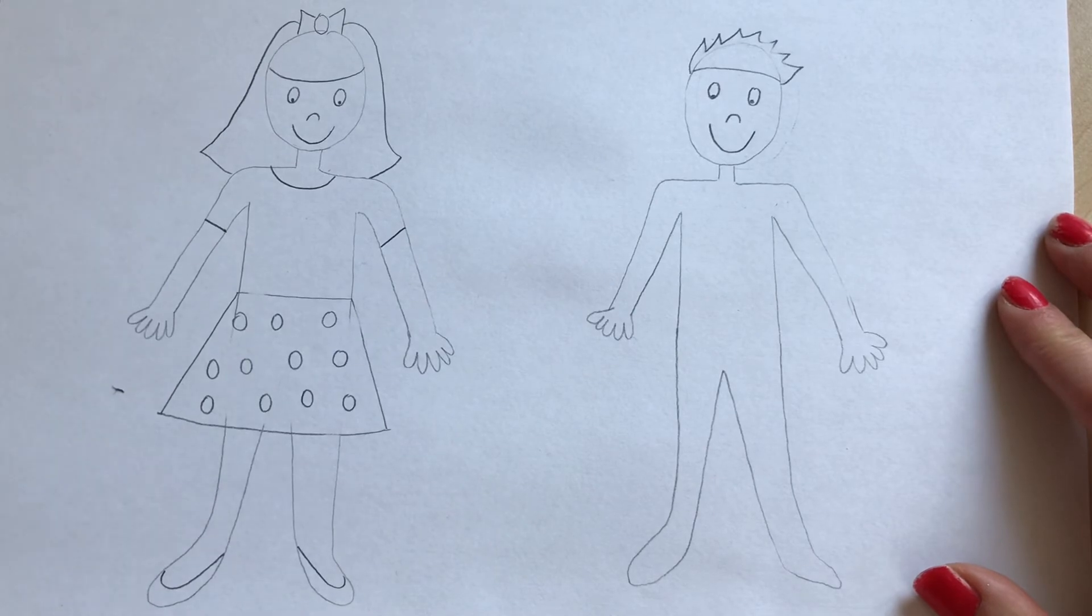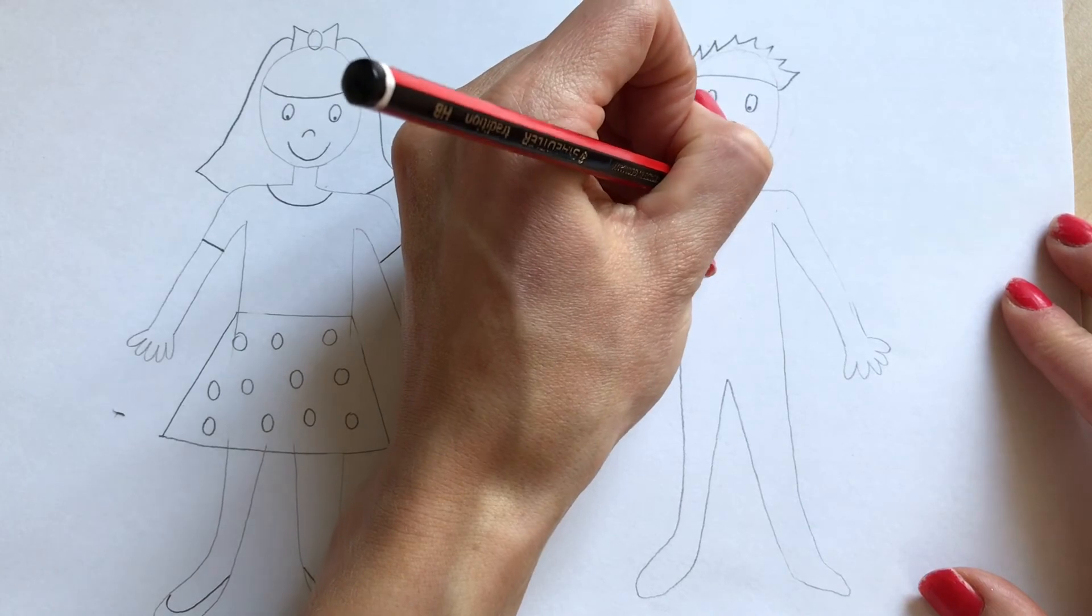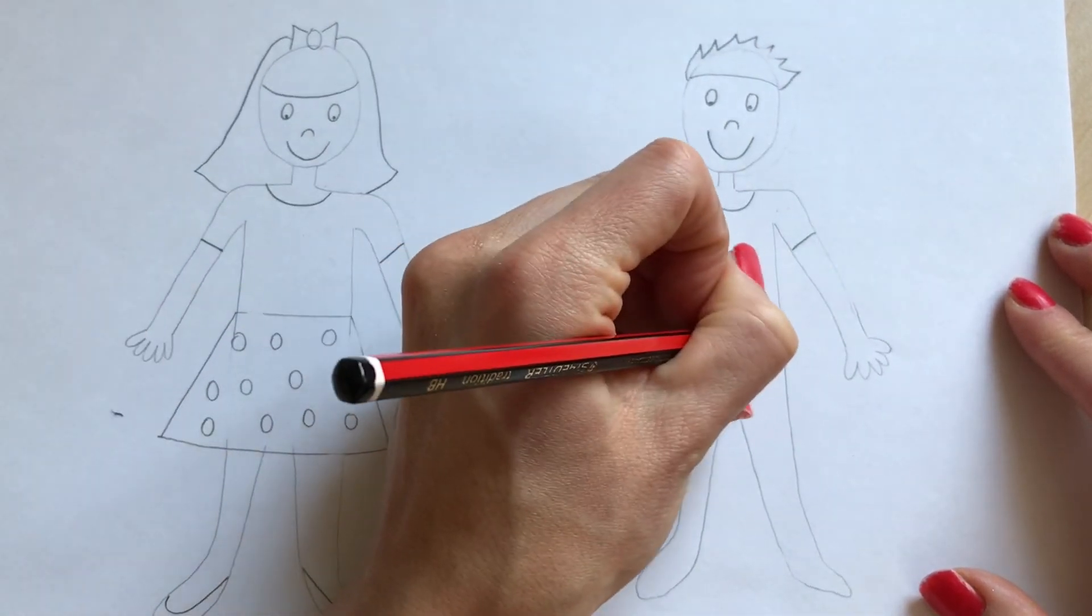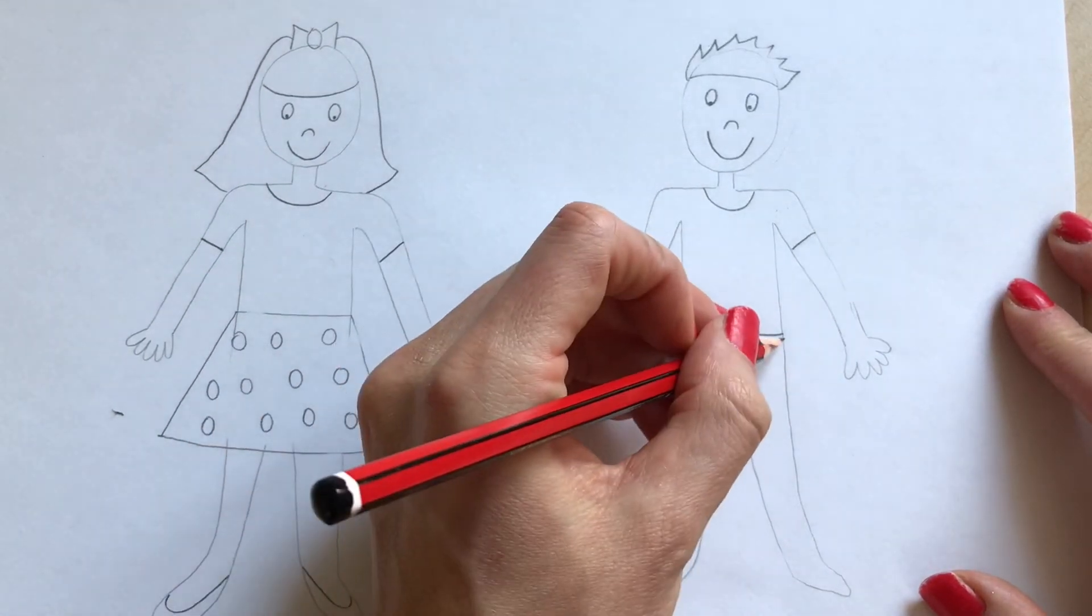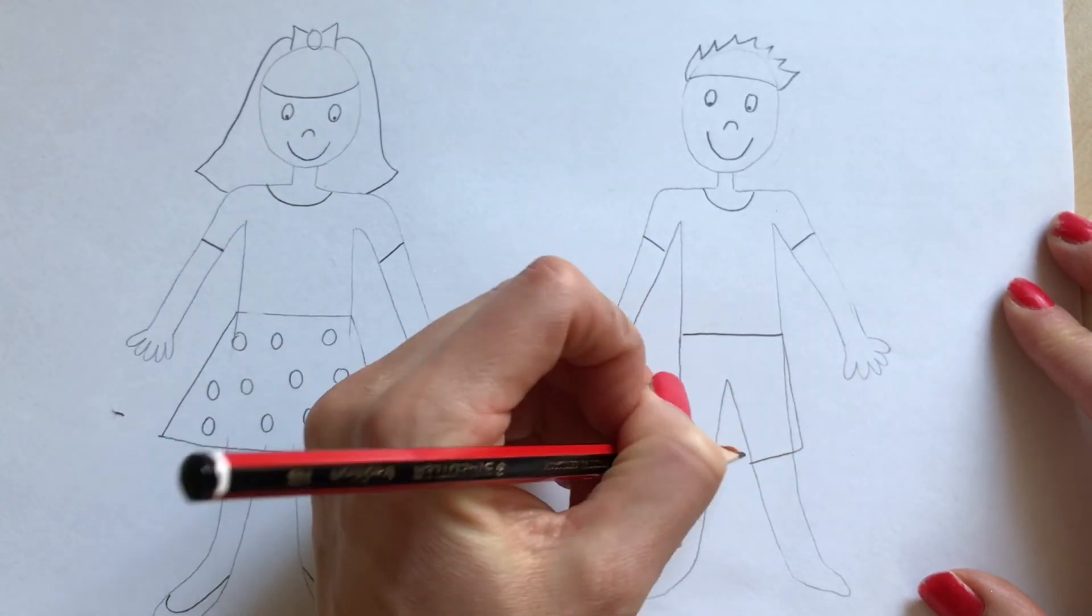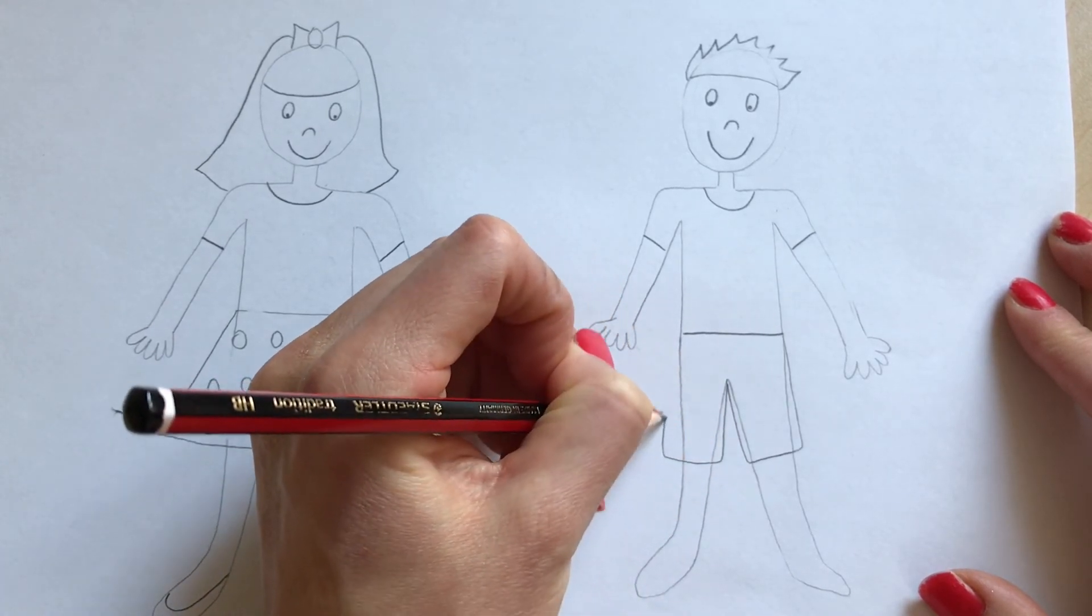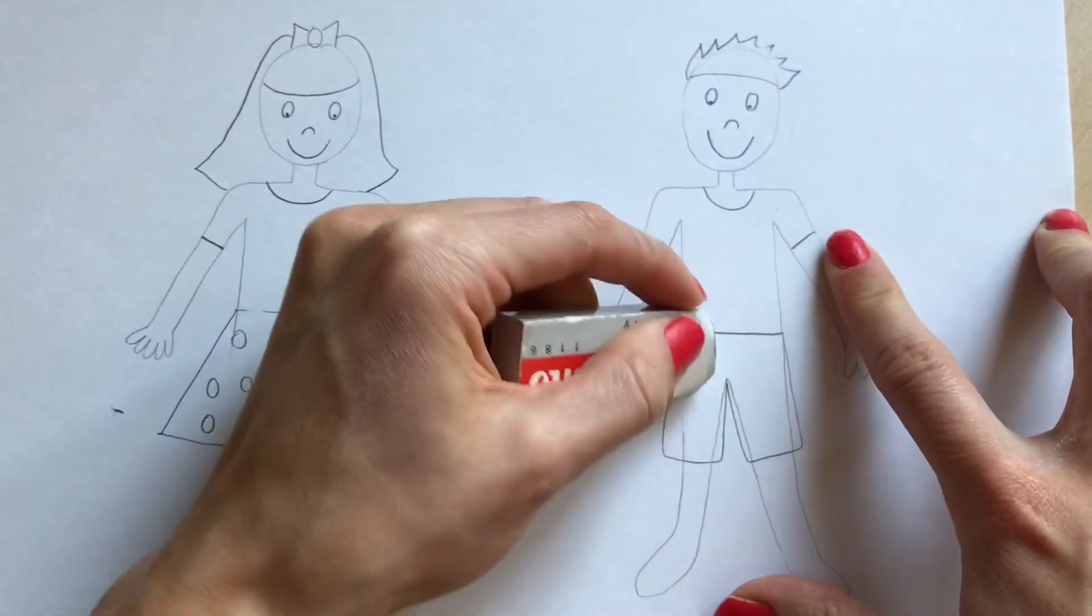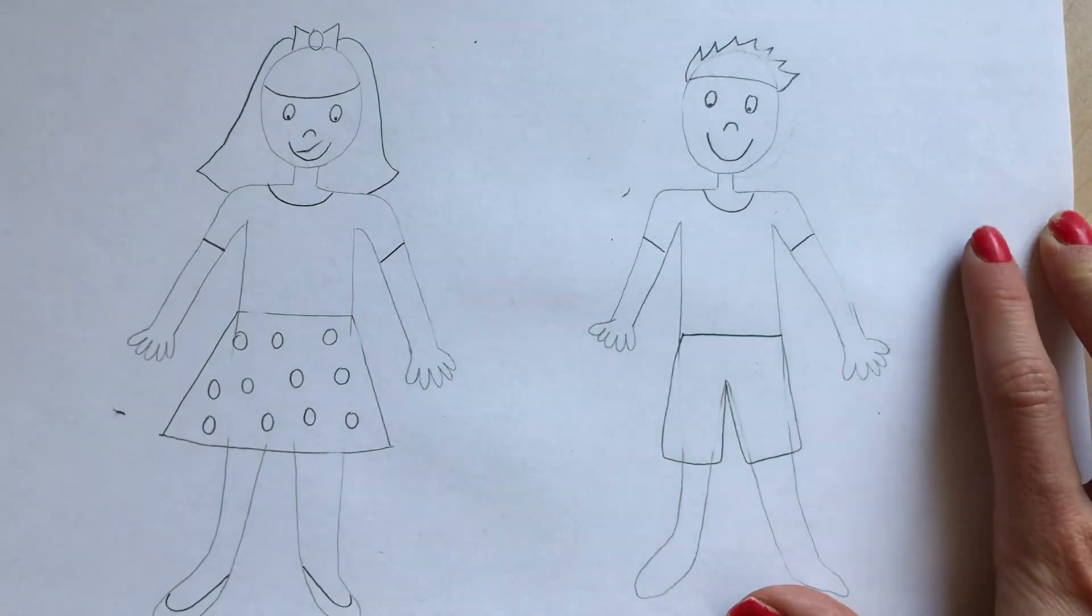And then I'm going to put my boy in shorts and t-shirt because today the sun is shining. So I'm just going to do a curved line there and a curved line here and a straight line across for the t-shirt and then I'm just going to give him some shorts. I'm going to come out slightly, go around, up, back down, across and back up. And again you might need the rubber to just rub out where his legs are but don't worry because when you colour it in it will disappear anyway.